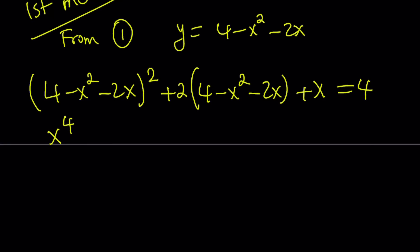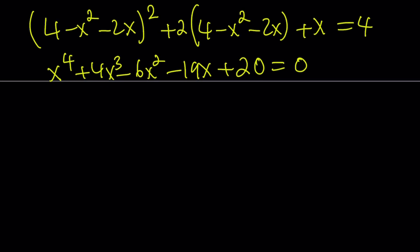You get x to the fourth power plus 4x cubed minus 6x squared minus 19x plus 20 equals 0. That's easy. This is a quartic, but I want you to notice, always check first the sum of the coefficients. In this case, 1 plus 4 plus 20 is 25, and negative 6 plus negative 19 is negative 25, so the sum of the coefficients is 0. Which means x equals 1 is a solution, which means x minus 1 is a factor, which means we can divide by x minus 1. We also find that x equals negative 4 is another solution, which means x plus 4 is another factor.